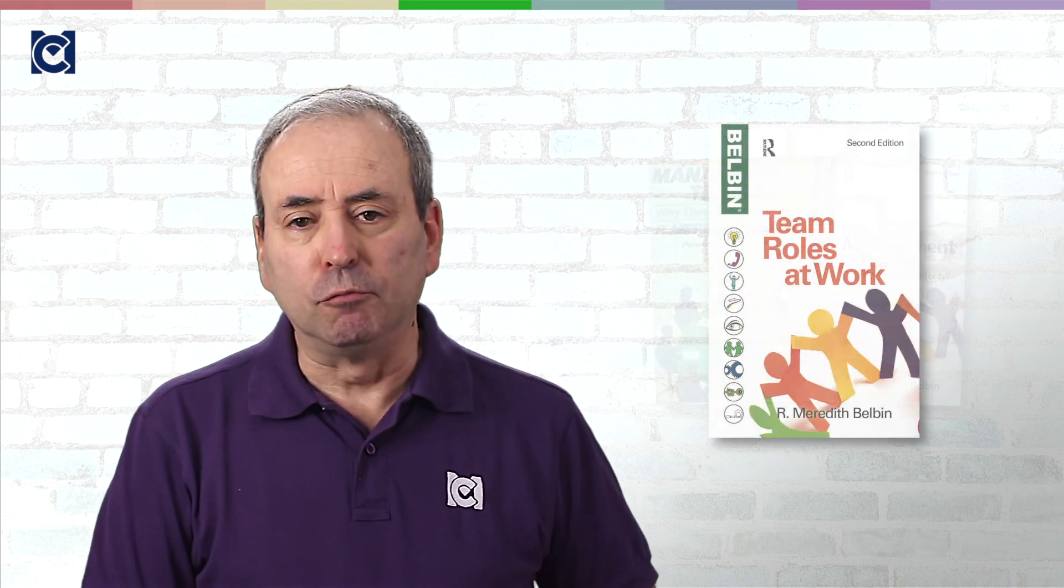Belbin documented the conclusions in his classic 1981 book Management Teams: Why They Succeed and Fail. Since then it's remained in print, but he's also written a number of other books including the best-selling Team Roles at Work. Belbin's fundamental finding is simple: teams do not succeed or fail based on the individuals within them but on the strengths of the team overall.